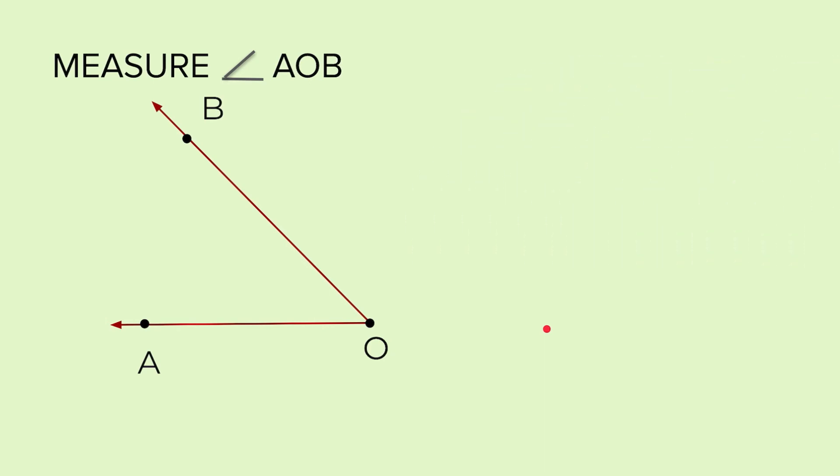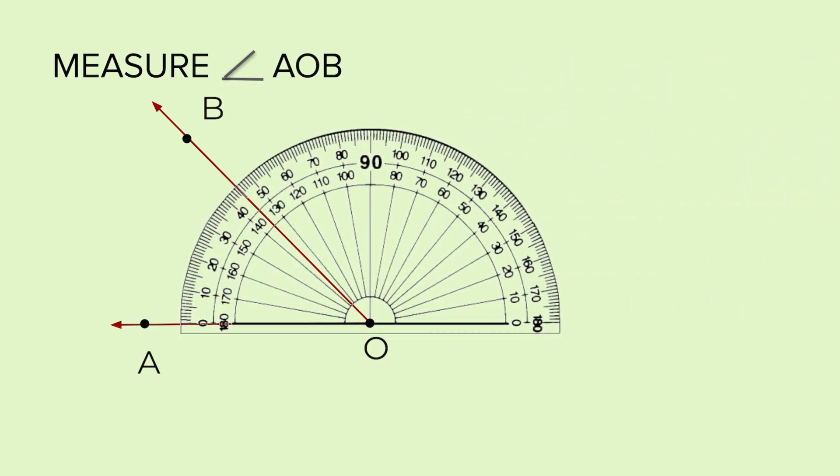Now, let us see what happens. We will take the protractor, put it on the vertex. Now, base ray is on the left of your vertex. So we will see the 0 is on the outer circle here now. So we will read the outer circle reading.